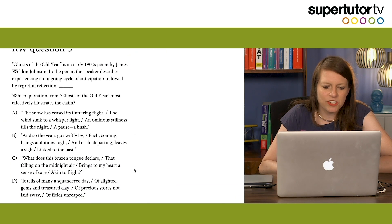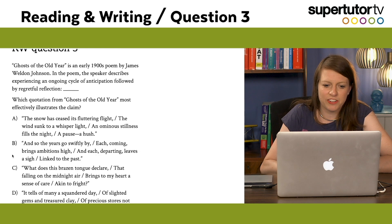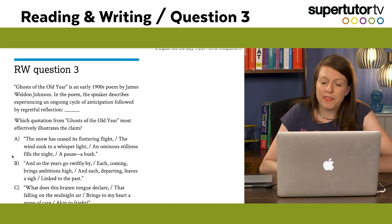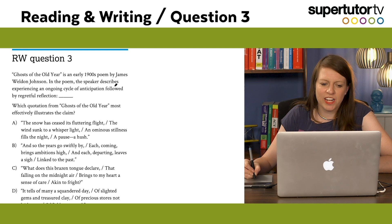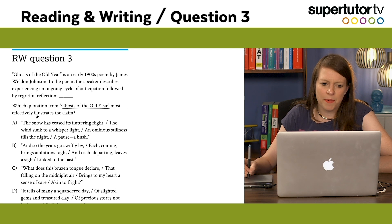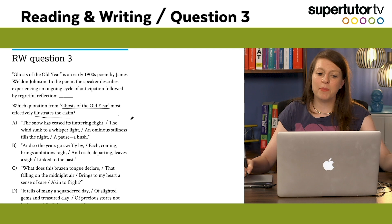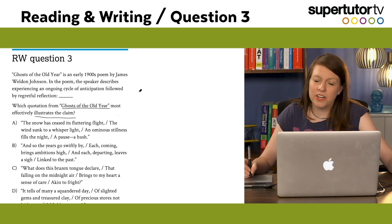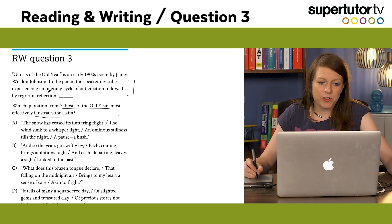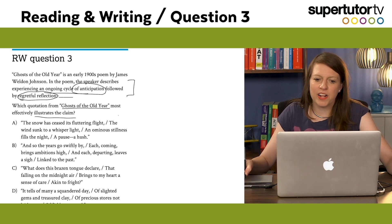I'm going to skip ahead to another reading and writing question that is more similar to the writing section and a little different in format from what we've seen on the SAT. 'Ghosts of the Old Year' is an early 1900s poem by James Weldon Johnson. In the poem, the speaker describes experiencing an ongoing cycle of anticipation followed by regretful reflection. Which quotation from this poem most effectively illustrates the claim? This is not the way evidence questions work on the current SAT — it's kind of new.